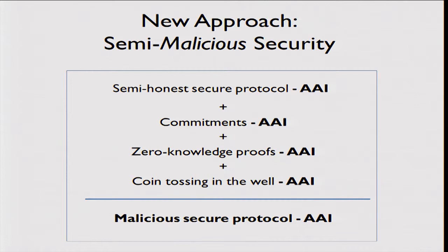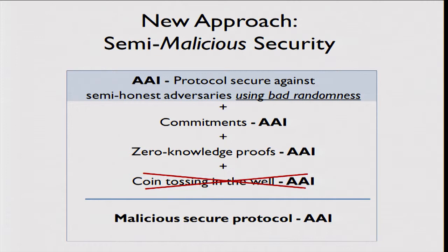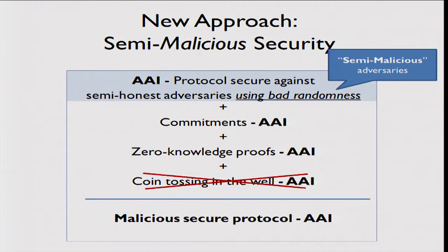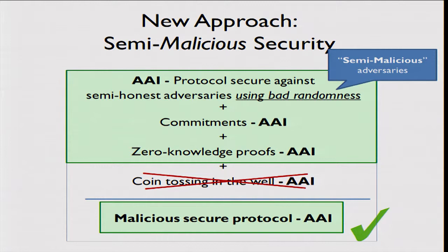Since that approach doesn't work, we take a different one. Instead of trying to construct something very strong and generic for coin tossing, we push the requirement into the base protocol. Rather than starting with security against adversaries assumed to follow the protocol completely honestly, we strengthen the base protocol to also protect against parties who follow the protocol but can potentially choose completely malicious randomness. We call this a semi-malicious adversary. Once we construct a protocol with this property, together with the other components, we can achieve full malicious security.